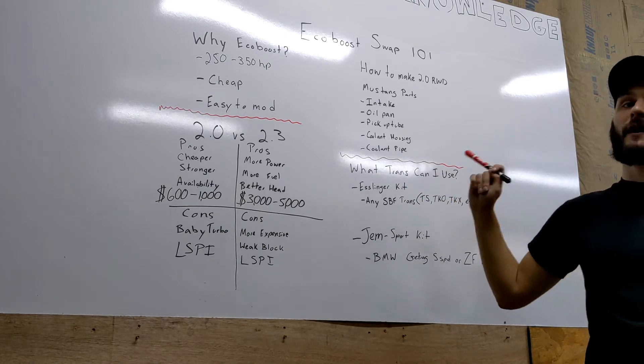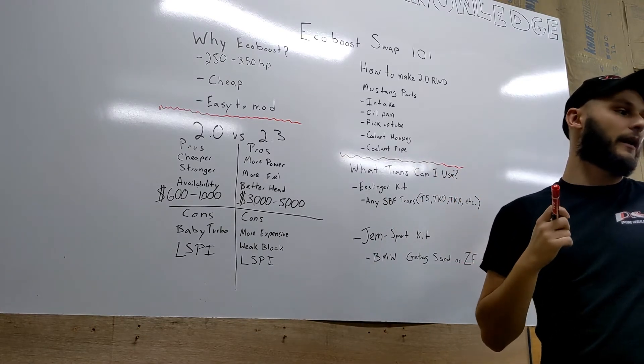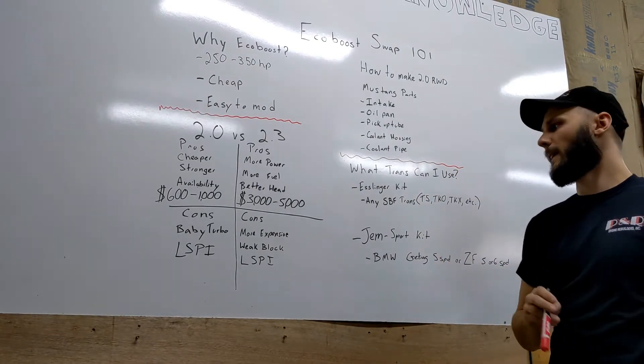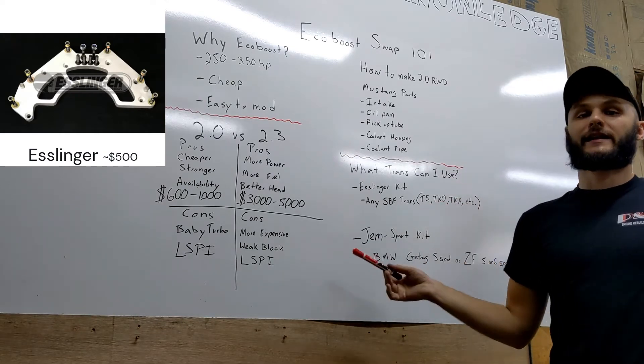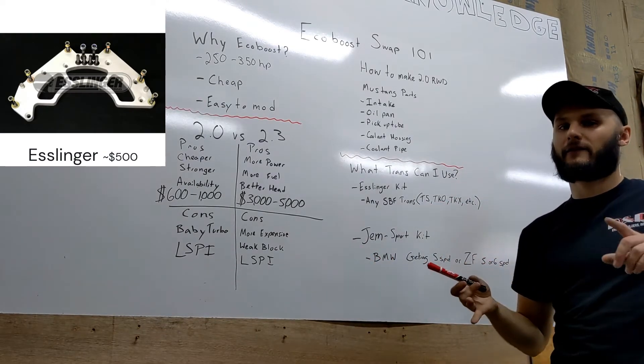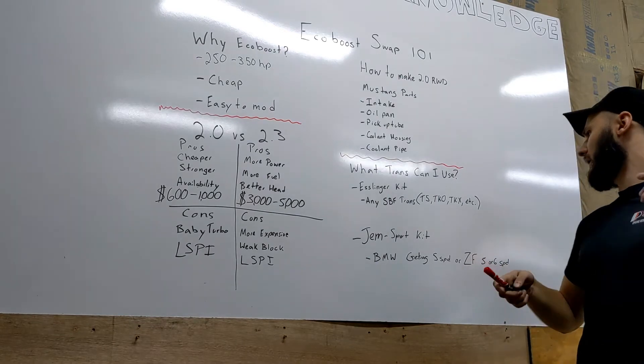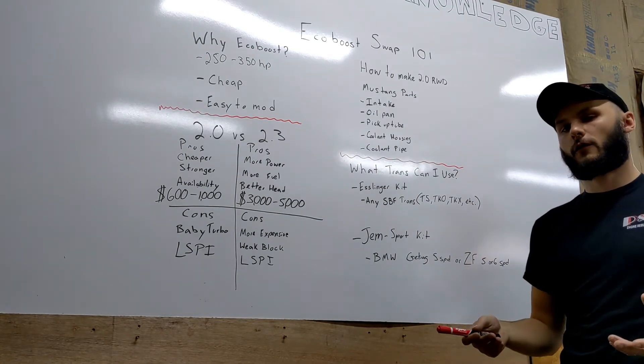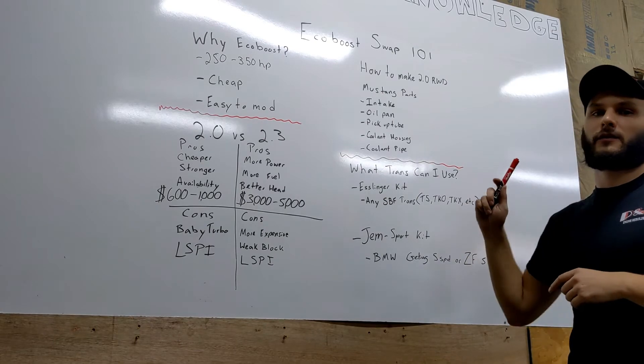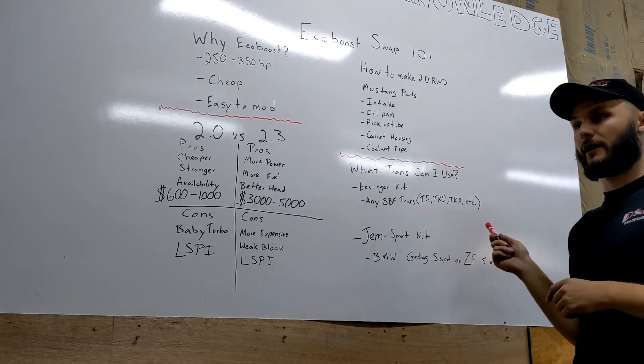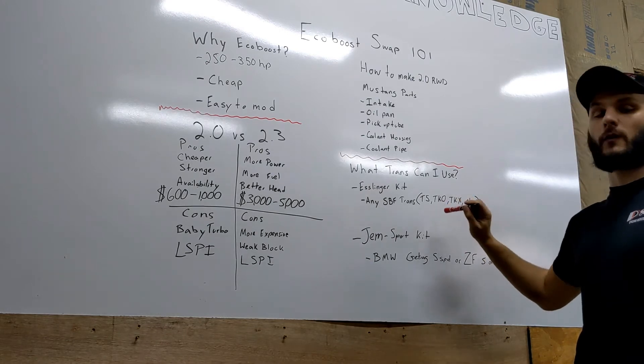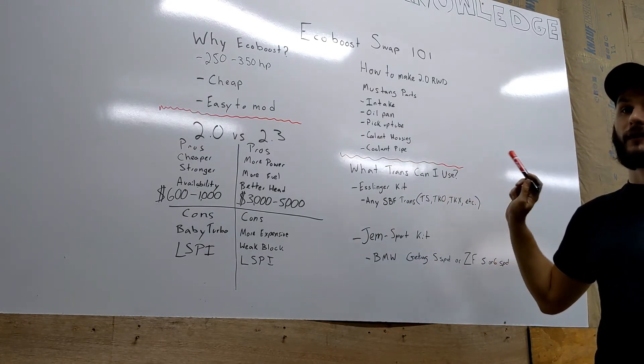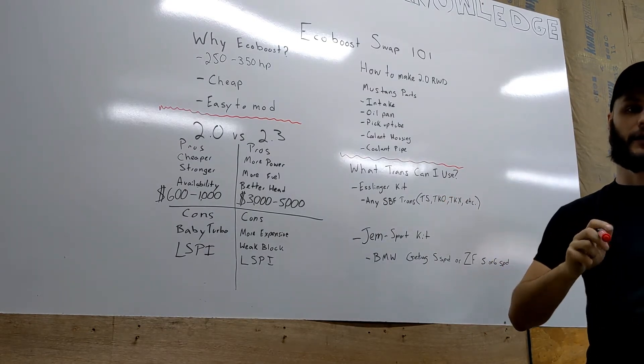The other thing we could talk about is what trans can I use behind these engines. There's two adapters that I know of: the Esslinger and the Gem Sport kit. Esslinger will allow you to bolt up to any small block Ford, so you can run your T5, TKO, TKX, or the TR-6060. Really anything that will fit behind a small block Ford will fit behind the EcoBoost with the Esslinger kit. You need a bell housing for whatever trans you're running, of course. This is what I went with. I went with the TKX in my car simply because the TKX will hold up to 600 foot-pounds of torque reliably, and I plan on going a little bit crazy with this car.